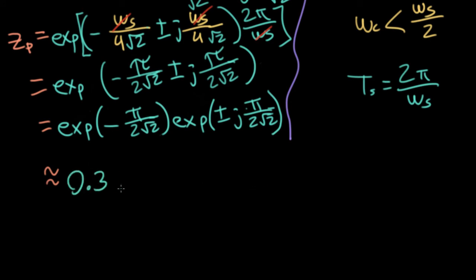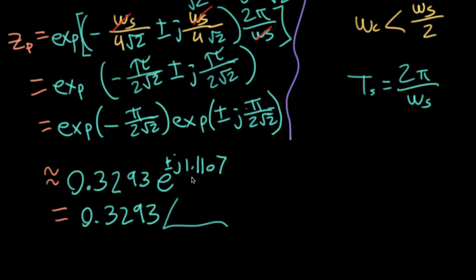Anyway, if you take these expressions and plug them into your calculator, you'll get 0.3293 times e to the j plus minus 1.1107. And if you wanted to write this in our usual polar form, but in terms of degrees, you'll get 63.64 degrees.